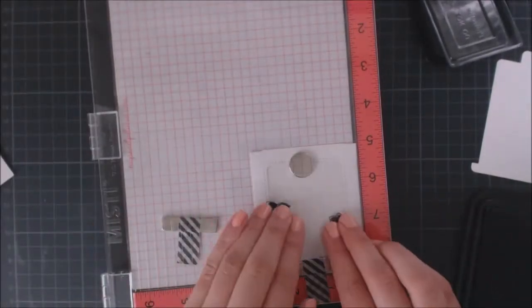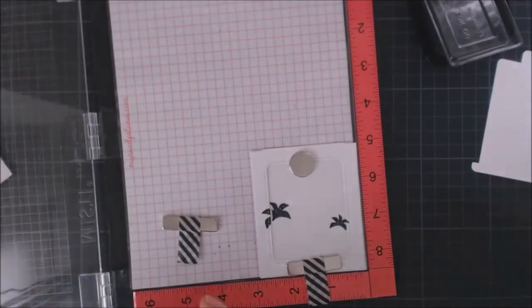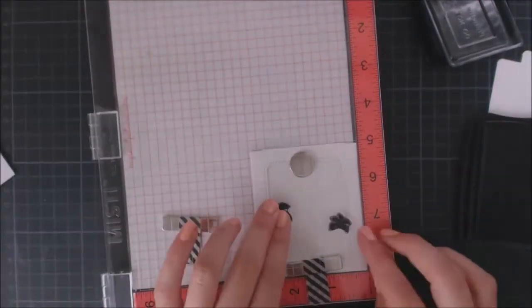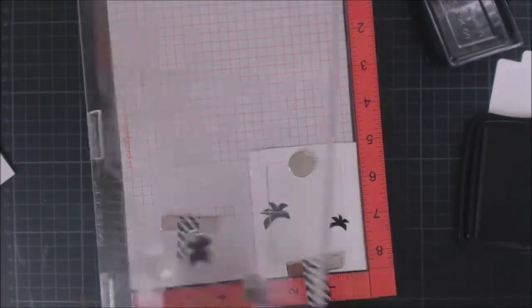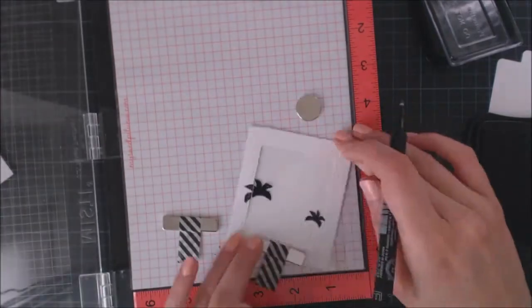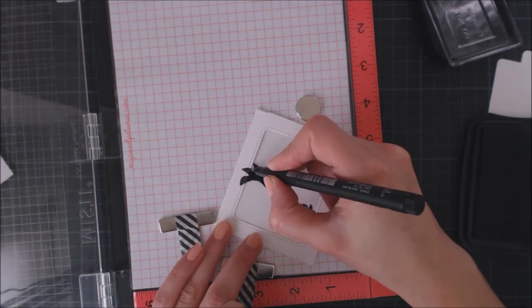I'm using my MISTI to do my stamping so I can stamp my images again if the first impression is not perfect. Also, because there's a little gap between the cardstock and acetate, I'm using a black permanent marker to fix it and any other imperfections.